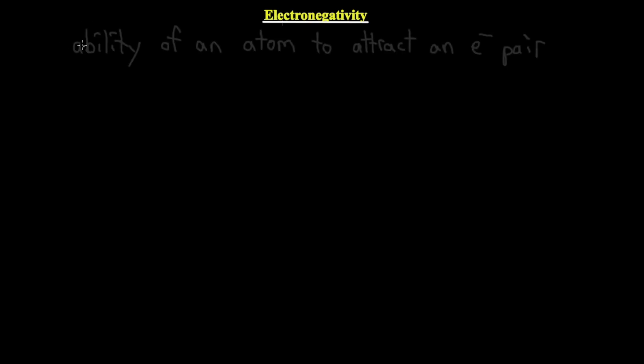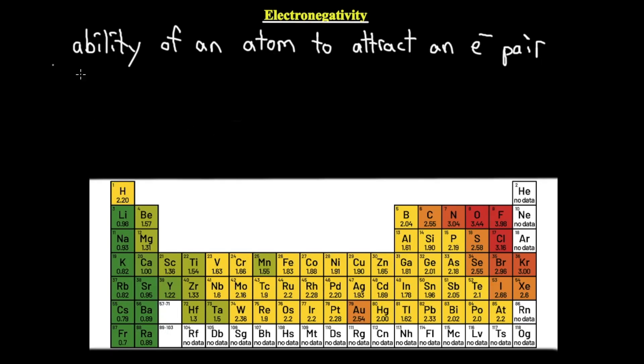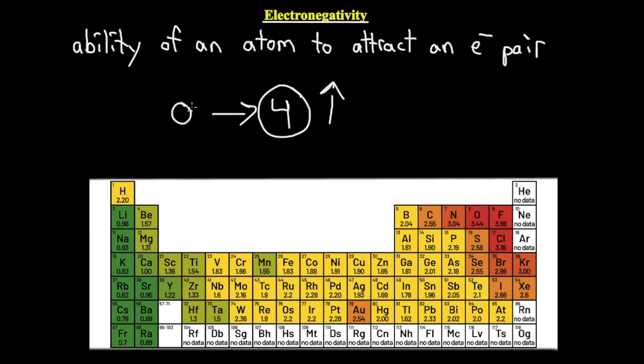First off, what is electronegativity? Electronegativity is defined as the ability of an atom to attract an electron pair. Although this is not particularly a periodic trend we've discussed, it does follow the same trend, very similar to that of electron affinity and ionization energy. The numbers here typically go anywhere from zero to four, where four reflects very high electronegativity and zero indicates very low electronegativity.